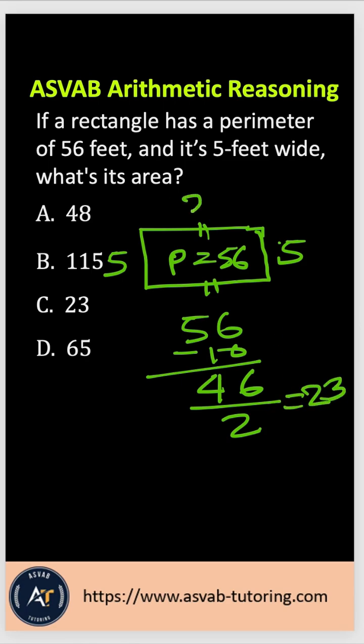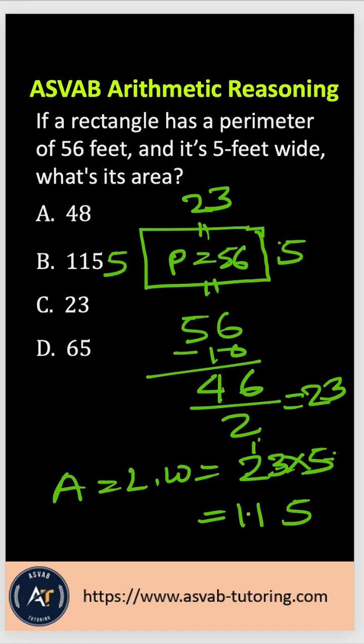So this side is 23. Now if you want to find the area, area equals length times width. If you multiply 23 times 5: 3 times 5 is 15, carry 1, then 5 times 2 is 10 plus 1 is 11. That gives you 115 square feet. So the correct answer is option B.